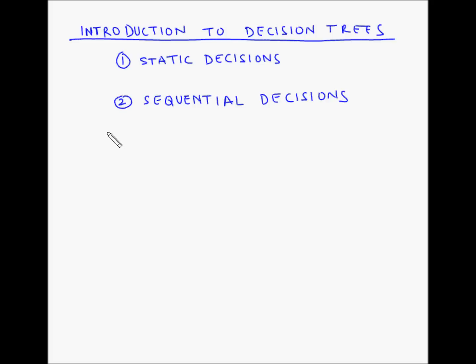These are characterized by a sequence of decisions with each decision influencing the next. Typical examples could be capacity planning, aggregate planning, project planning, investment decisions, replacement decisions, etc.